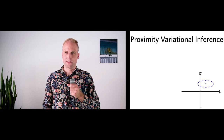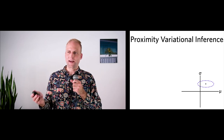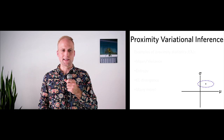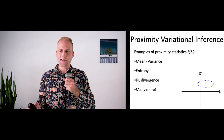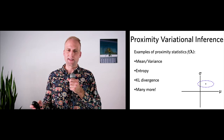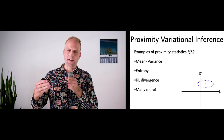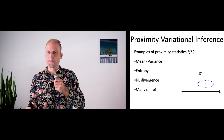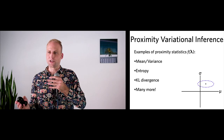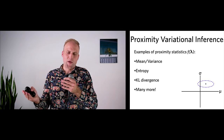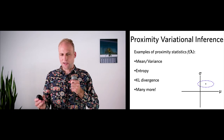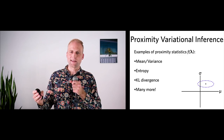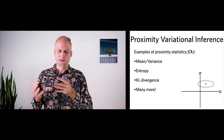Examples of knowledge about probability distributions that might benefit optimization: the mean or variance of the distribution, the entropy of the distribution, or in a probabilistic graphical model, the KL divergence between the current approximation and the prior distribution. There's a wide variety of choices, and it's interesting to think about what proximity statistic might lead to a beneficial constraint during optimization.